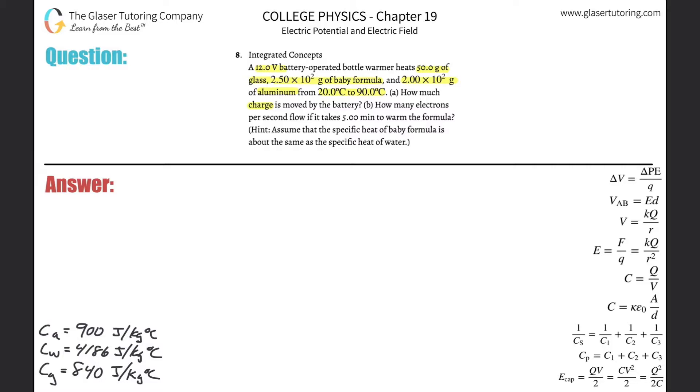We understand that in order to heat materials from some temperature, in this problem it's 20, to some other temperature, to 90, it takes energy. And we also know that if energy is being applied, and there is a certain voltage over which that energy is being applied, then that energy is being supplied by some charge that's being moved. So the first thing I'm going to do is calculate the amount of energy it takes to heat all that stuff.